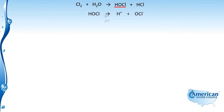This reaction goes both ways and is pH dependent. As pH is lowered, the equilibrium shifts, favoring the formation of hypochlorous acid, which is about 100 times more effective as a disinfectant than the hypochlorite ion.